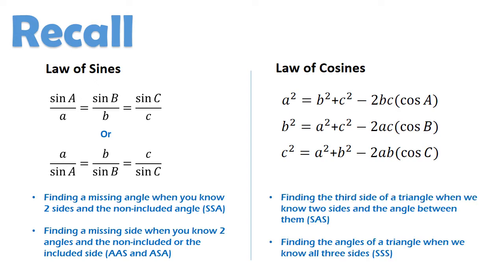Ang Law of Cosines naman, ay na-apply natin sa mga sumusunod na pagkakataon. First, when you are asked to find the third side of a triangle when we know two sides and the angle between them. Second, when you are asked to find the angles of a triangle when we know all the three sides. So, that is, SAS and SSS. So, kapag kahindi natin pwedeng i-apply ang Law of Sines, pwede natin i-apply ang Law of Cosines.